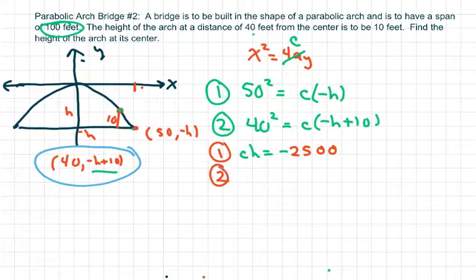And for number 2, we get 1,600 equals negative CH plus 10C.